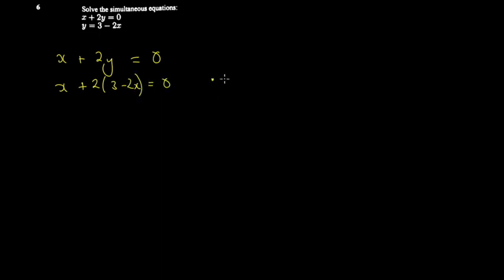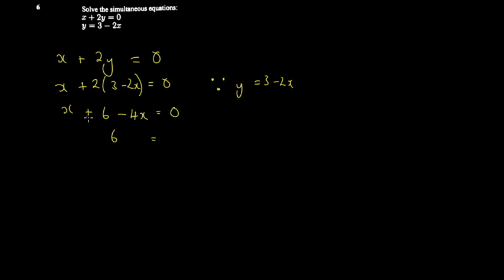We have x plus 2y equals zero. I'll substitute y equals 3 minus 2x into this equation, giving x plus 2(3 minus 2x) equals zero. Expanding: x plus 6 minus 4x equals zero. Rearranging: 6 equals 4x minus x, so 6 equals 3x. Dividing both sides by three, we get x equals two.